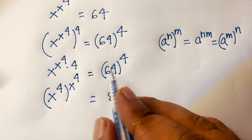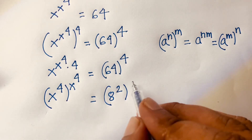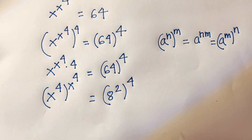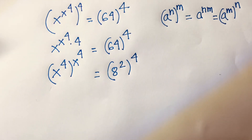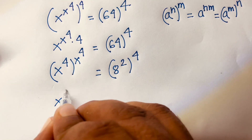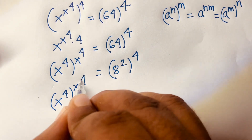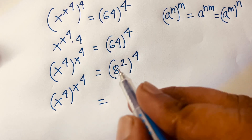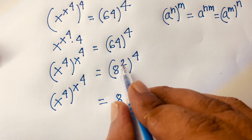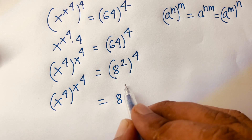This equation becomes x to the power 4, whole raised to the power x to the power 4, equals 8 squared to the power 4. Since 2 times 4 equals 8, the right side simplifies to 8 to the power 8.